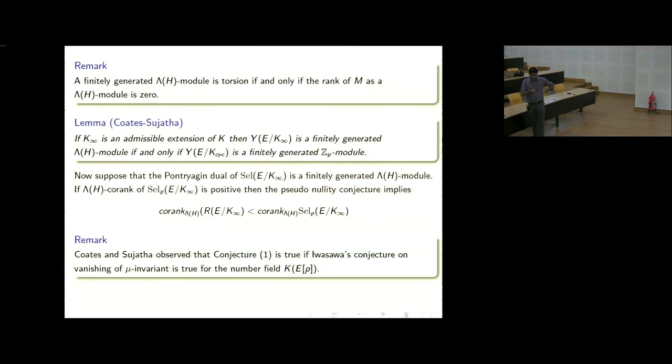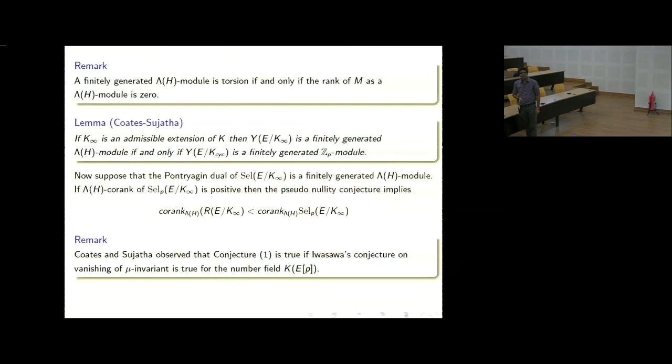Another observation says that Conjecture A — that the dual fine Selmer is a finitely generated Z_P module — is equivalent to Iwasawa's conjecture that the mu invariant over the cyclotomic extension of the field obtained by joining P-torsion points of E is zero. So it basically says that if Conjecture 1 is true for all elliptic curves over all number fields, then Iwasawa's conjecture is true for all number fields — that is, for class groups.